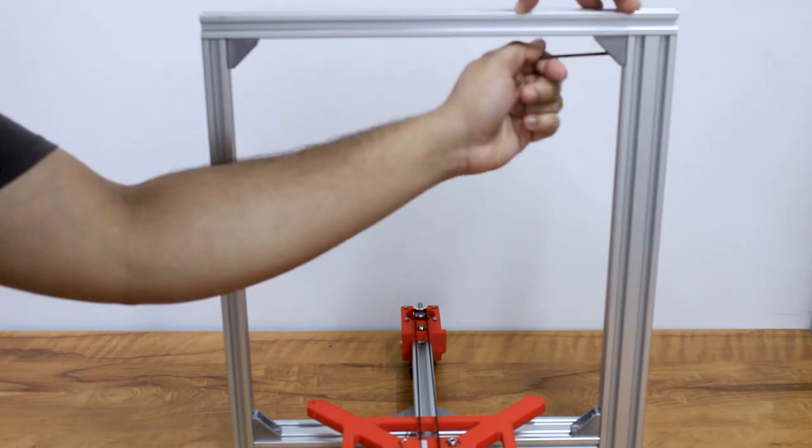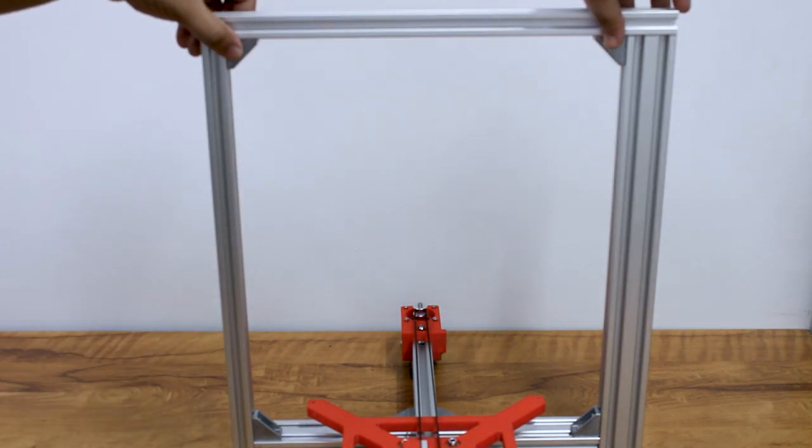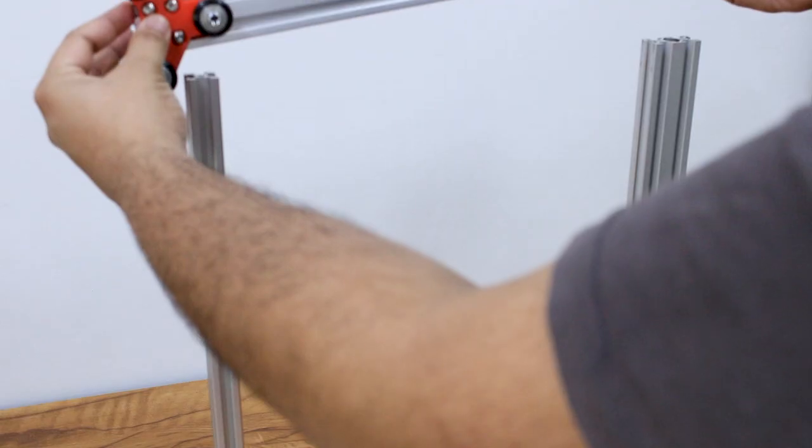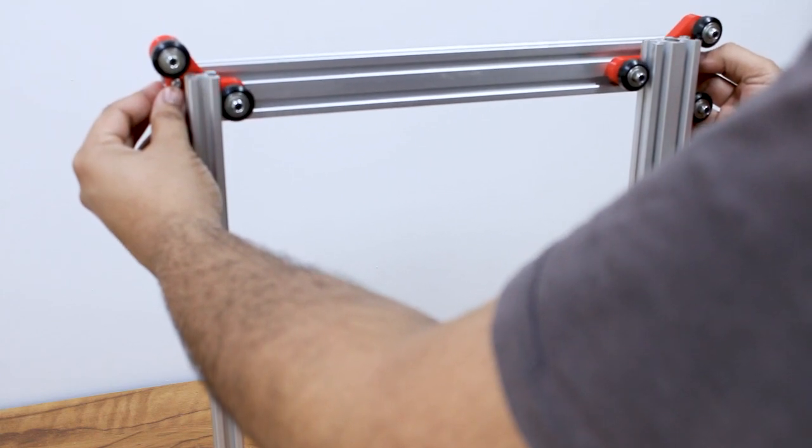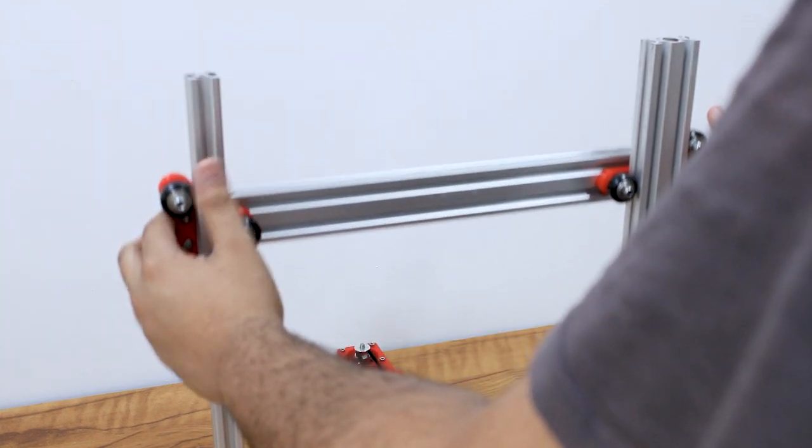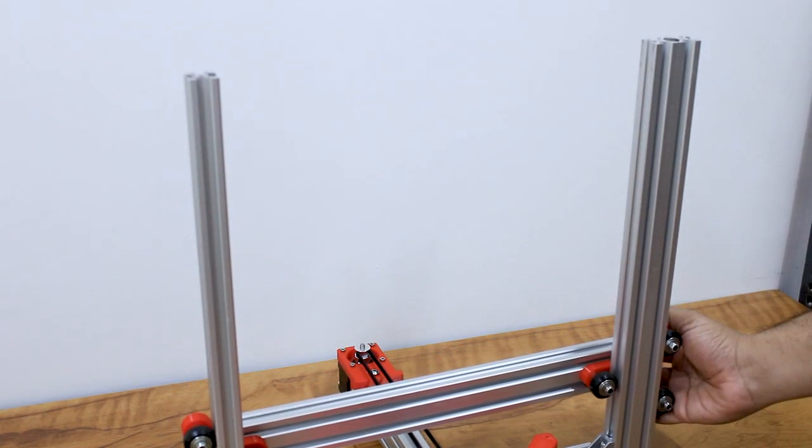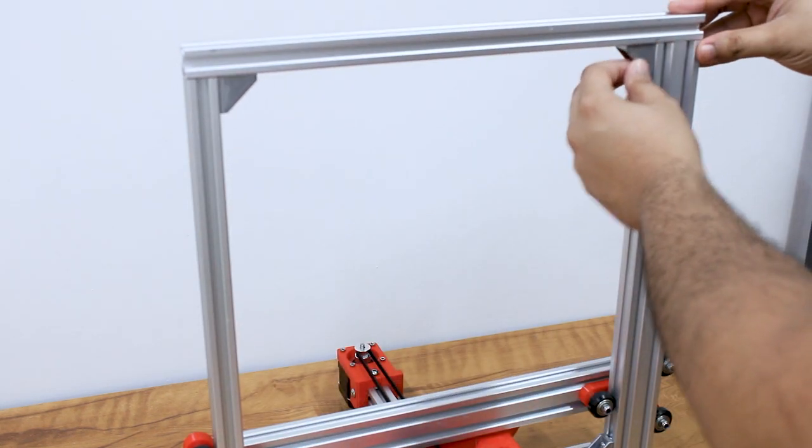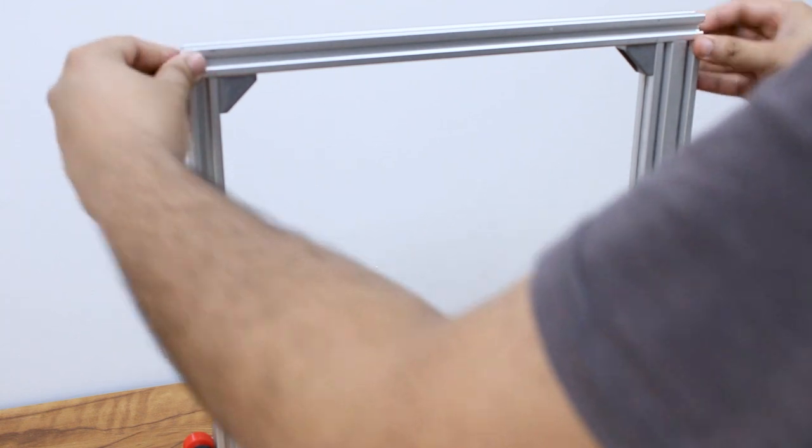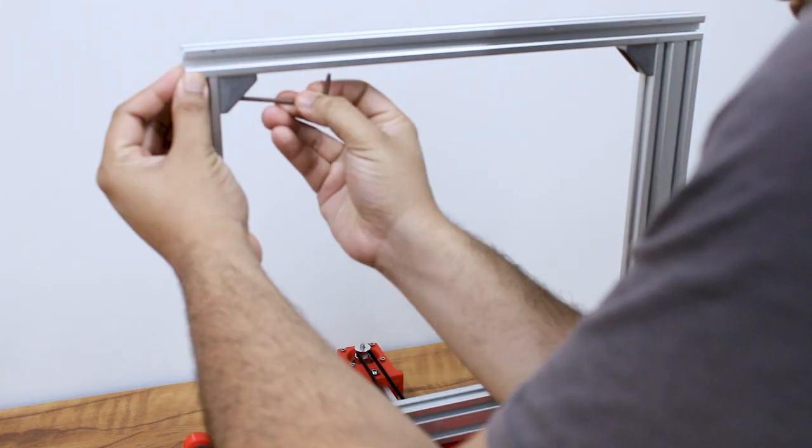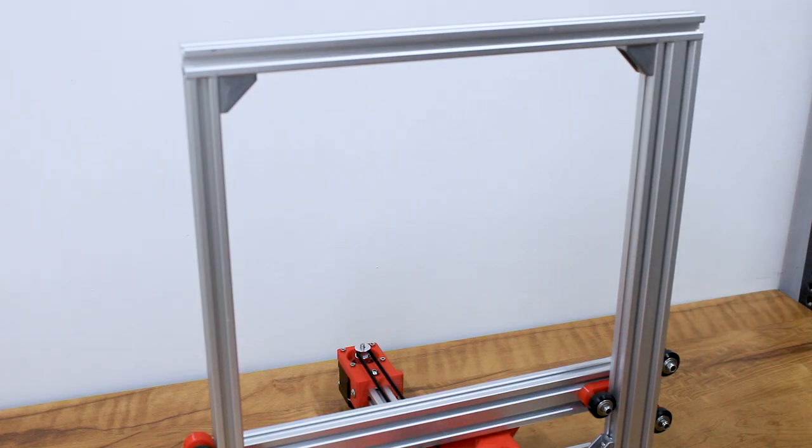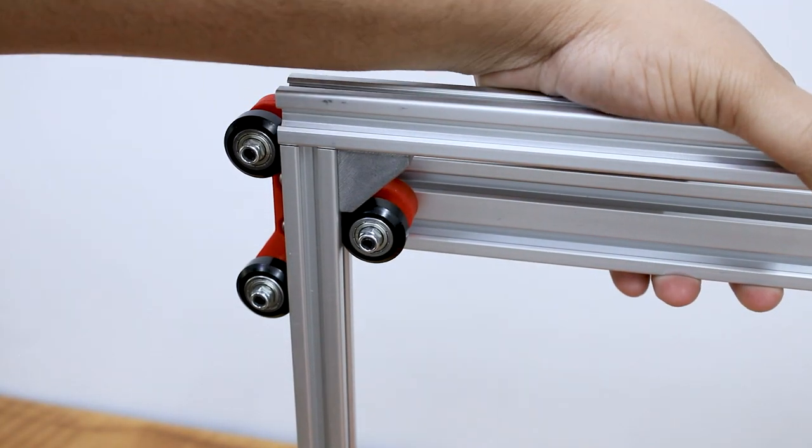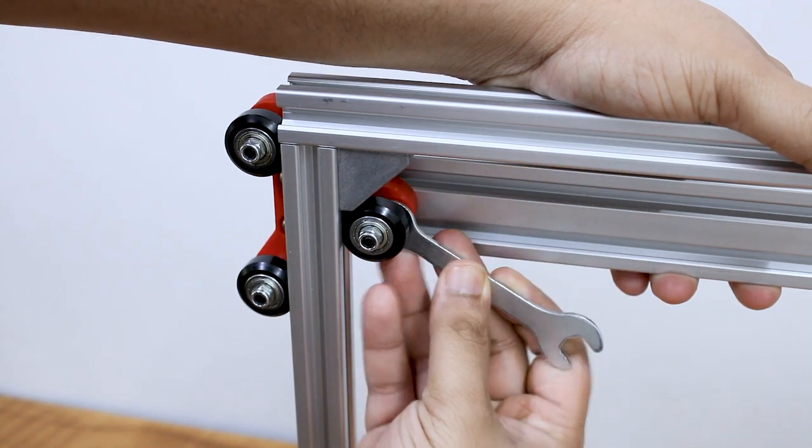Remove the top profile and slowly insert the X-axis profile. Place the top profile again and tighten its bolts. Turn the eccentric spacers to tighten the grip of the V-wheels.